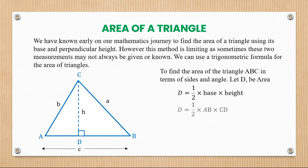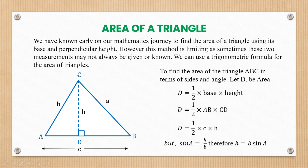Since D equals a half times base times height, we can see that D equals a half times AB times CD. We label AB as small c, because it's on the opposite side of angle capital C. The height h is represented as CD. We can also see that sine of angle A equals h over b — the opposite side of angle A is h, and the hypotenuse is small b. Therefore, making h the subject: h equals b·sin(A).